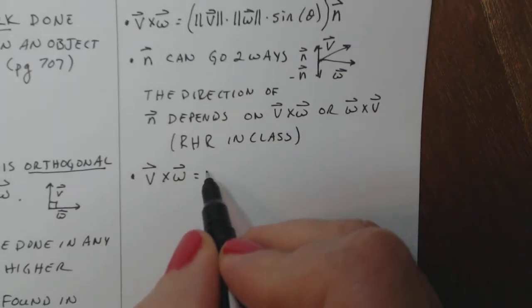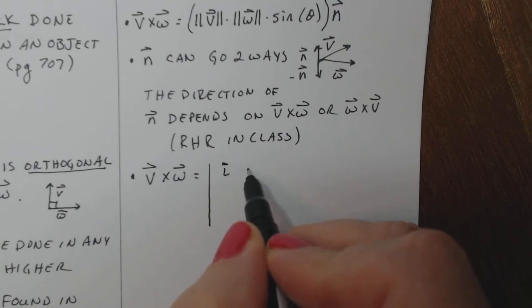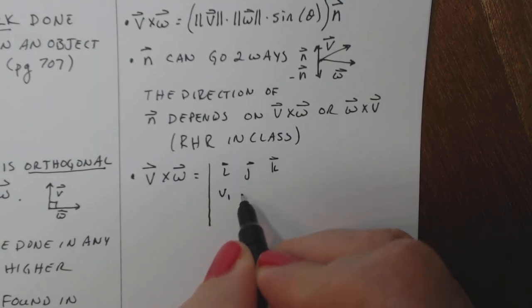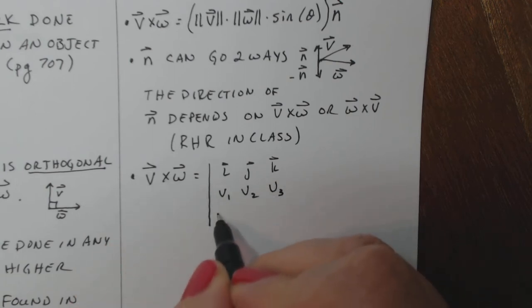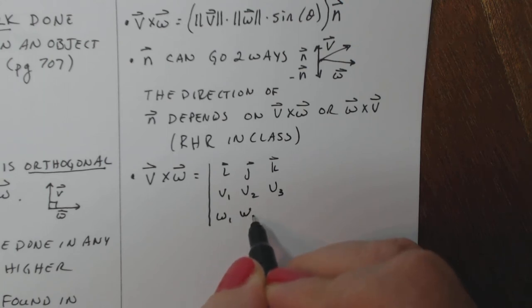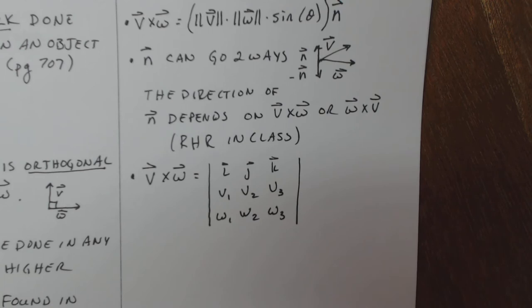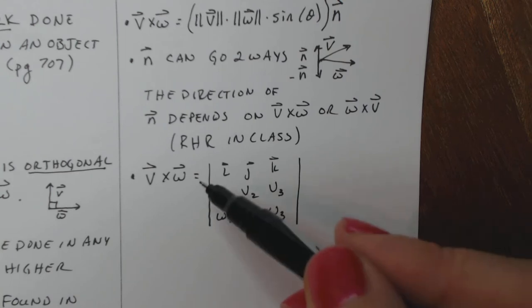So we have another formula to calculate the cross product. Now, this is a determinant of a vector. So the first row is I, J, K. The second row are the components of V because V comes first. And the third row are the components of W.